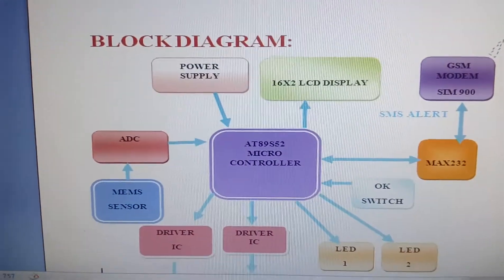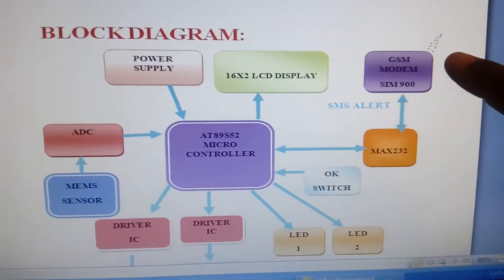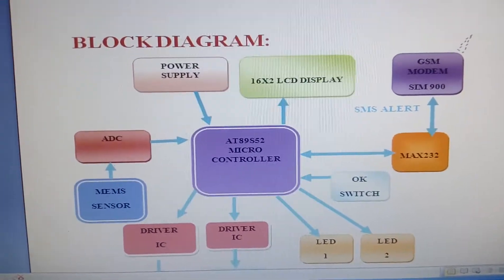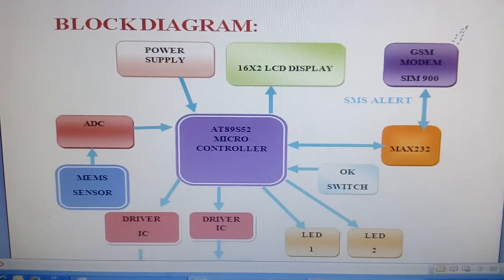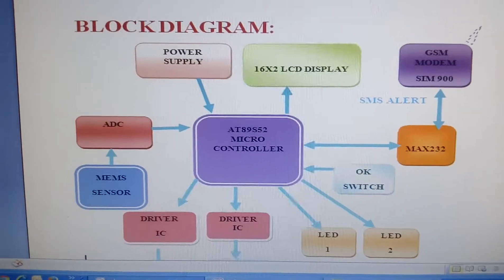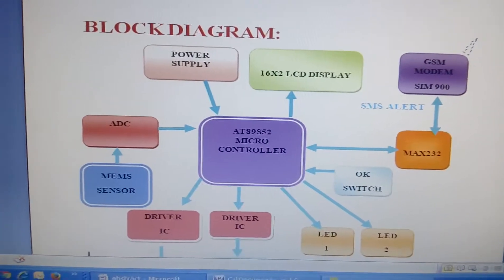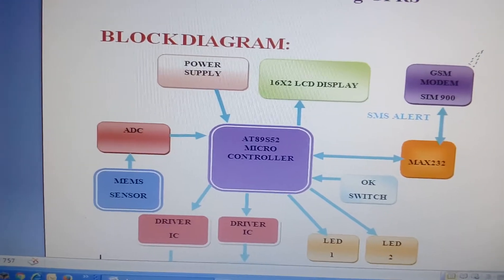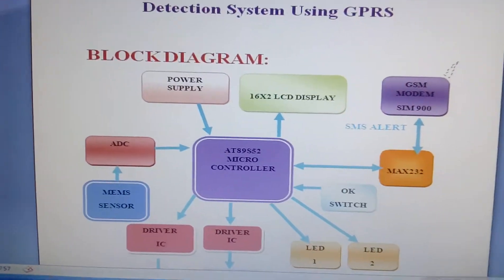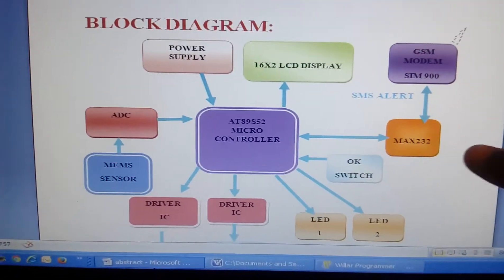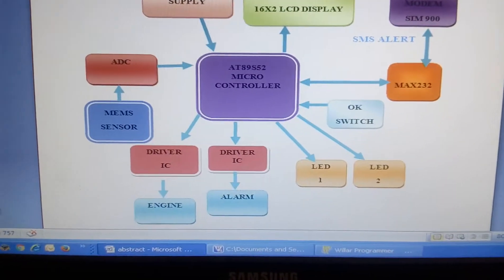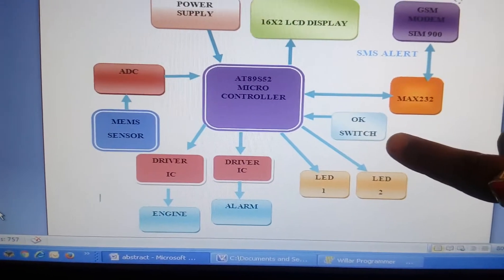Here I am using a GPRS modem — GPRS module SIM900. I am enabling the GPRS settings, so there is no need to use a GPS module, as the modules now come with location capabilities. Here MAX232 IC is used, and if the accident is a minor accident, the driver can press the switch to bring the loop back.